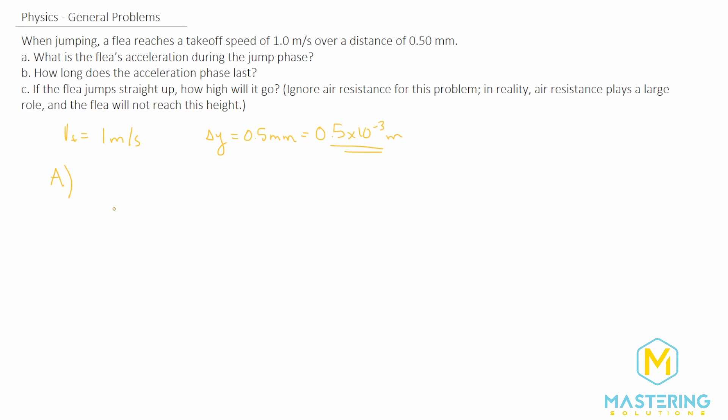The kinematic equation that we'll be using is v final squared equals v initial squared plus 2 times a times delta y. It's good to think about why we're using the different equations that we do. In this case, we don't have any time given, and if you look at the kinematic equations, all the other ones have time in it, so this is the only one that we can use for this.